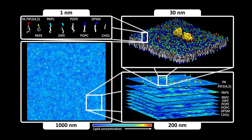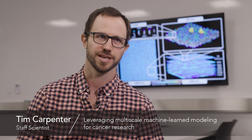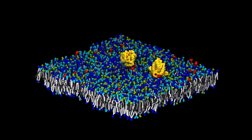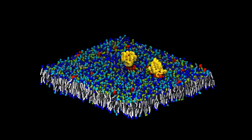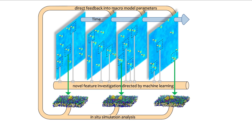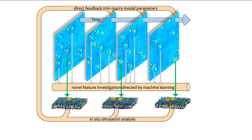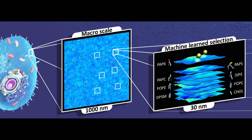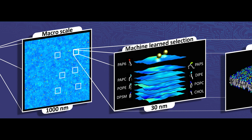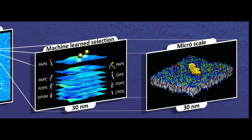We are trying to look at the mechanism of how cancer initiates, and specifically how a cell membrane can have a role in that mechanism. To investigate this problem, we're leveraging the lab's supercomputing capabilities to put together a multi-scale simulation capability where we can look at things in very minute detail, but also on a much larger and longer time scale that's closer to the experiments that our colleagues will carry out.